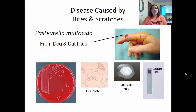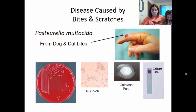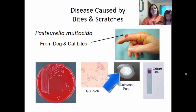Diseases caused by bites and scratches: Pasteurella multocida can happen from dog and cat bites, and also through human bites. It causes local swelling and pain and can cause pneumonia and sepsis. These are gram-negative coccoid bacteria that grow on blood agar in milky white colonies. They are catalase positive and oxidase positive, meaning they utilize oxygen and undergo aerobic respiration.